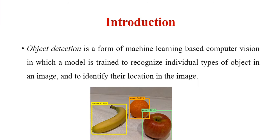What is object detection? Object detection is a form of a machine learning algorithm where it detects individual objects in an image. For example, you can see individual objects in the image are labeled along with the probability score. Plus you can see a bounding box associated with each object.